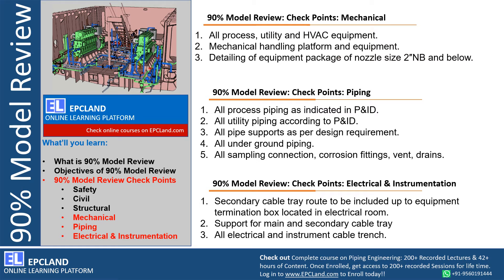For package items — during 30% and 60% we talked about package items and their orientation. In 90% model review, we assume orientation was reviewed during 60%. 90% is specifically about small bore sizes: is there any nozzle on hold, or any pending vendor information? All small-bore connections and instrument connections with respect to package items are reviewed. Accessibility to all small-bore valves and instruments is checked, especially with respect to orientation and location. Whether the operator can access the package item with proper accessibility for all items requiring operator access — this is checked during 90% model review for mechanical items.